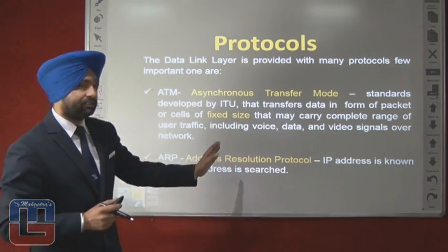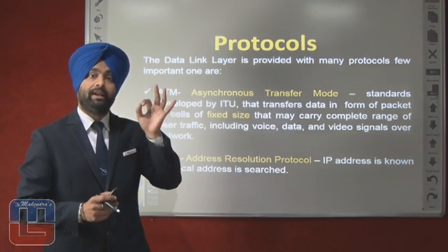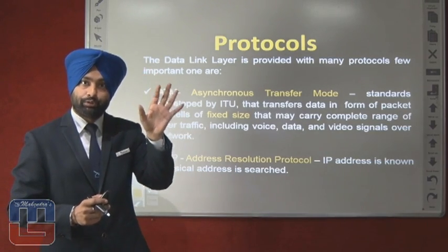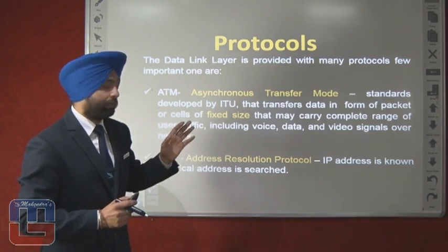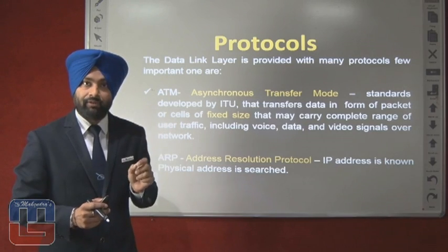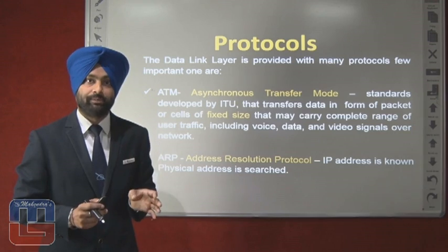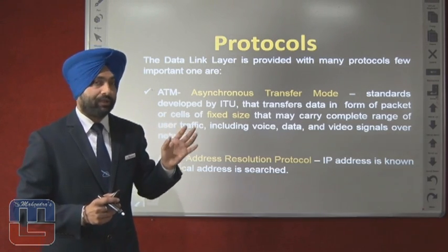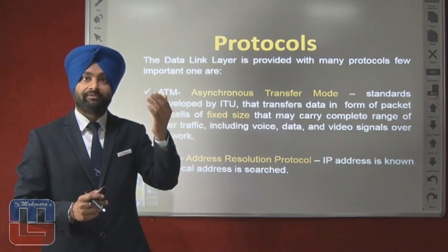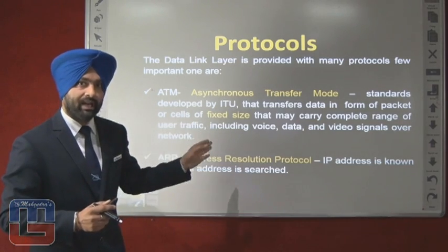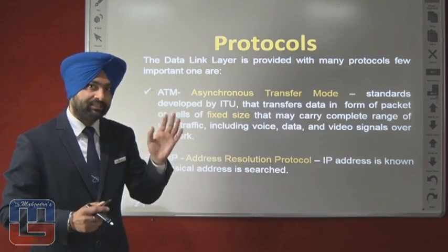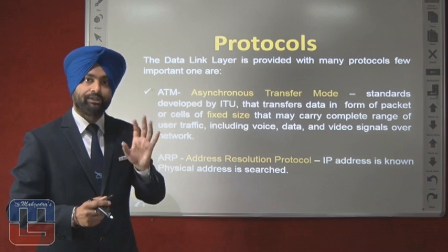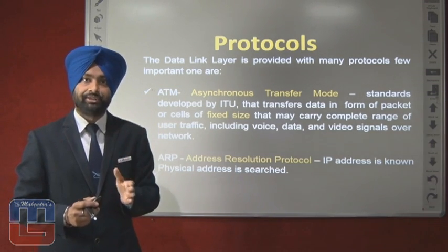Moving on to the next protocol: ARP, Address Resolution Protocol — one of the most important protocols of DLL. If you go through books regarding ARP, you will come to know that ARP actually falls in the 2.5 layer of OSI. It means ARP is a major protocol of DLL that actually operates above the network layer. When the IP address is known, the physical address of the device is searched — this is the function of ARP. The opposite of this is done by RARP, Reverse Address Resolution Protocol.